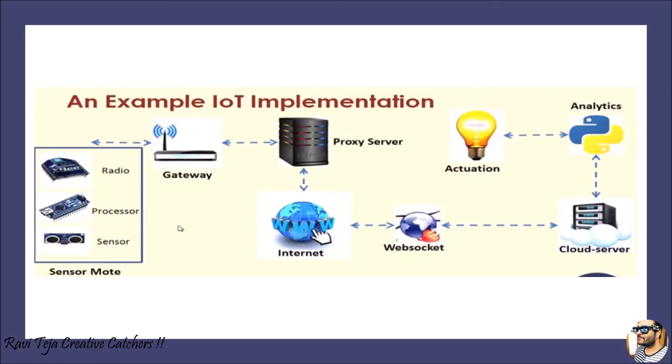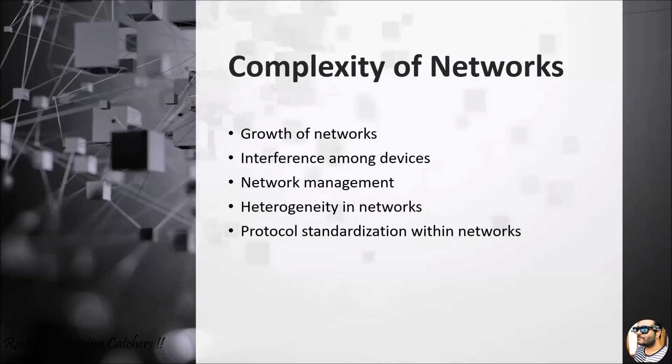At last, the data can be utilized for either monitoring or controlling. Actuation is one output — like glowing a bulb, moving a motor, or running a motor. Starting from sensor data collection all the way to actuation, the steps in between — gateway, proxy server, internet, web socket, cloud server, and analytics — this entire step-by-step process all comes under the networking process.